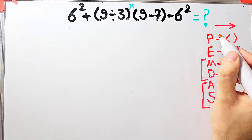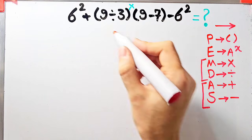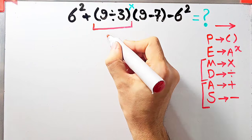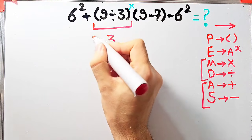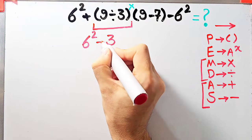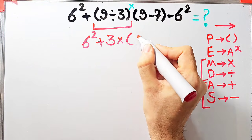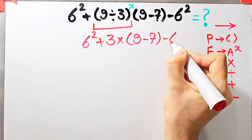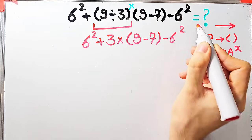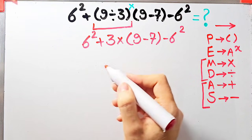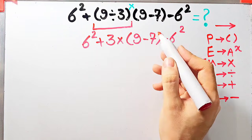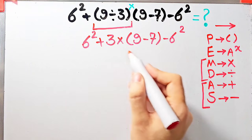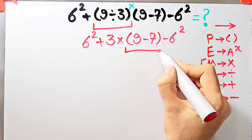According to the PEMDAS rule, in this question we first simplify the parentheses: 9 divided by 3 equals 3. Now the question is 6² plus 3, then times open parenthesis 9 minus 7 close parenthesis, then minus 6². We still have a parenthesis, so we simplify it next: 9 minus 7 equals 2.